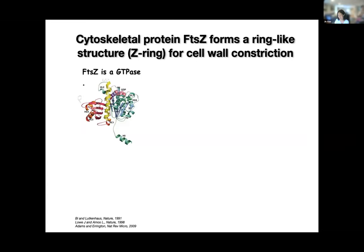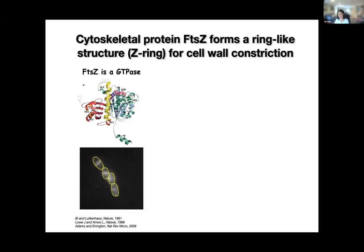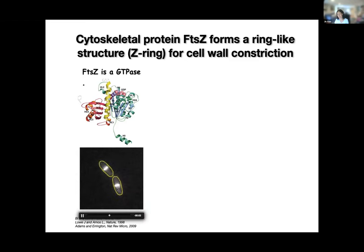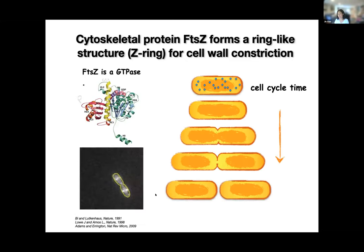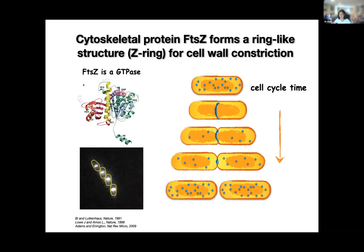Many groups over the past 50 years have found that there is one protein called FtsZ, a cytoskeletal protein — a tubulin homolog and GTPase — that plays a very important role in cell division. Here we labeled FtsZ with a GFP fluorescent protein, and you can clearly see that this protein comes to the middle of the cell, and when it's about to divide, they quickly shrink and go to the two daughter cells. FtsZ scatters inside the cell, then comes to the middle to form a ring-like structure, then gradually that ring diminishes in diameter and separates the two cells.